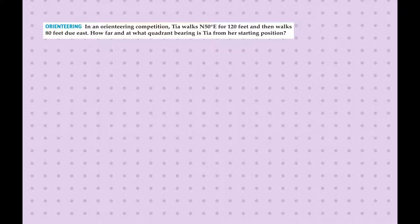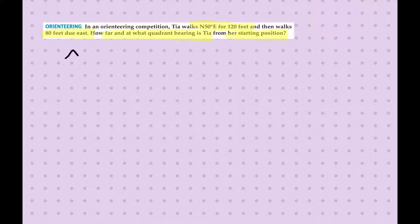Here we have a problem: Tia walks 50 degrees northeast for 120 feet and then walks 80 feet to the east. We want to know how far and at what quadrant bearing Tia is from her starting position. We're going to approach this by separating it into two different vectors and then putting them together.